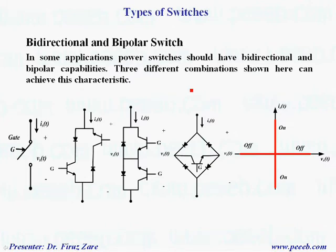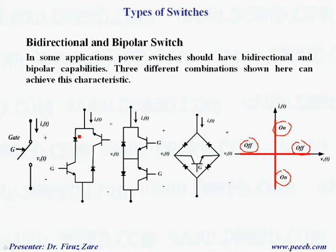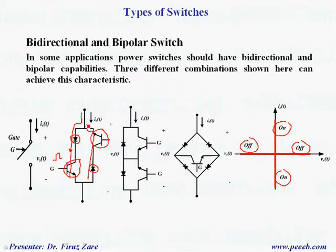Bidirectional and bipolar switch: in some applications, power switches should have bidirectional and bipolar capabilities. Three different combinations are shown in these figures. If we have to operate in four quadrants — blocking positive and negative voltage and conducting positive and negative current — we can use two diodes and two switches. When the current is positive, it passes through this leg when we apply the gate signal and this switch conducts. If the current is negative, this diode conducts through the switch when we apply the gate signal to this transistor. This configuration can handle positive and negative currents.